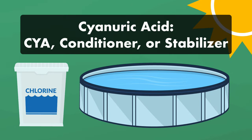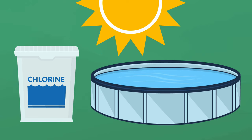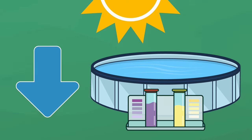Cyanuric acid, also known as CYA, pool conditioner, or pool stabilizer, is crucial for maintaining your water's chemical balance. But while CYA helps protect your chlorine from the sun's ultraviolet rays, too much CYA isn't good for your water chemistry. So here's everything that you need to know about how to lower your CYA levels.